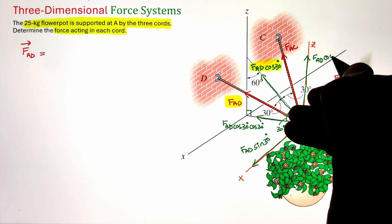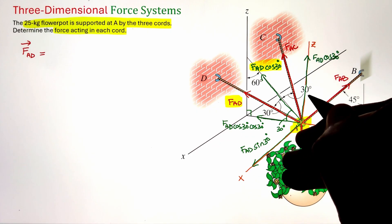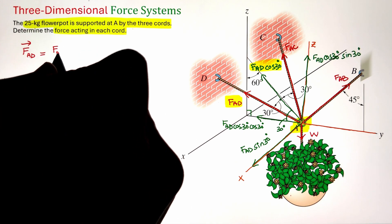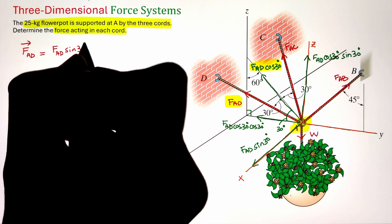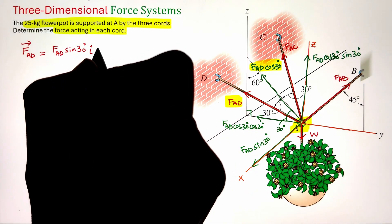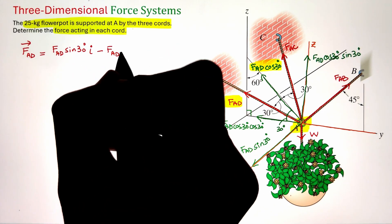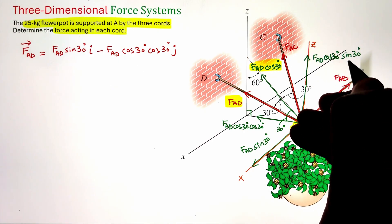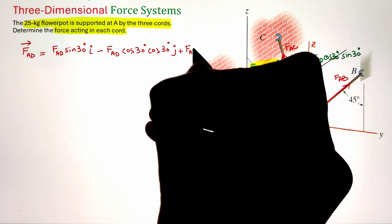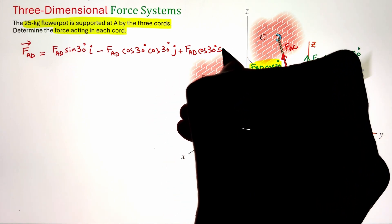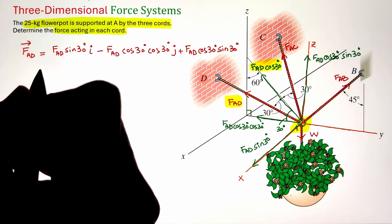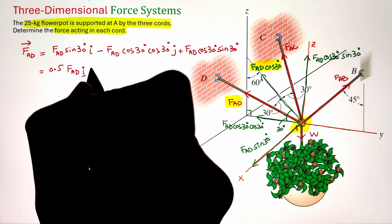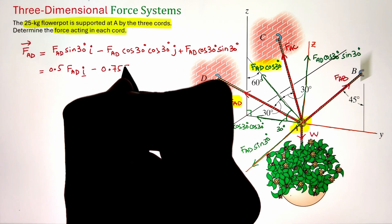The F_AD force vector can be represented as: F_AD sin 30 i (along the positive x-axis), minus F_AD cos 30 times cos 30 j (negative y direction), and positive F_AD cos 30 times sin 30 k (vertically upward). Simplifying, we get F_AD = 0.5 F_AD i − 0.75 F_AD j + 0.433 F_AD k.